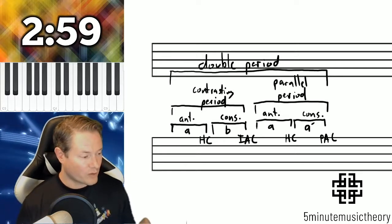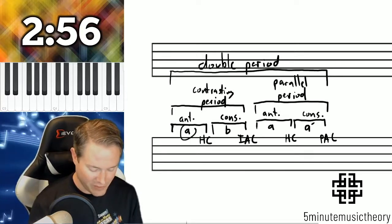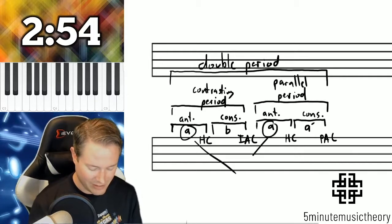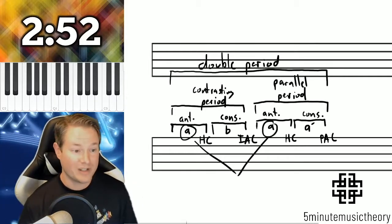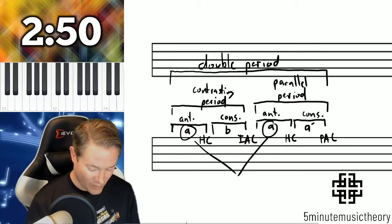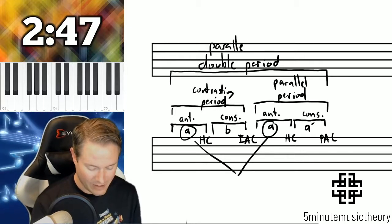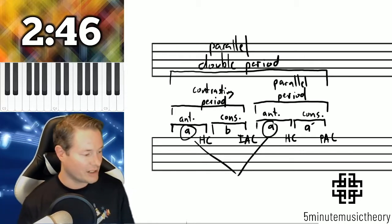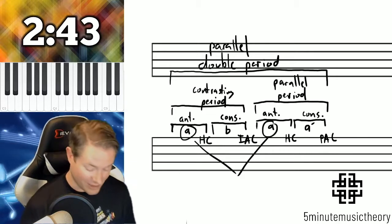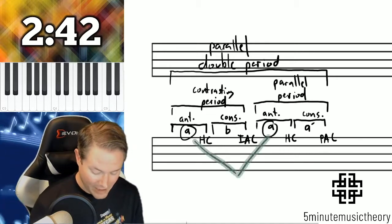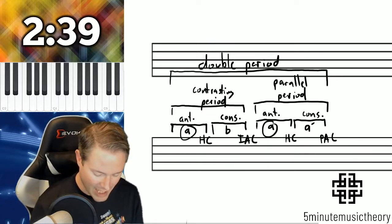For the overall double period, what we look at is the first phrase in each of the periods. Notice that they're both A's. So that means that this is a parallel double period, because they start with the same phrase. That's what makes this parallel.